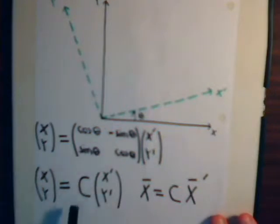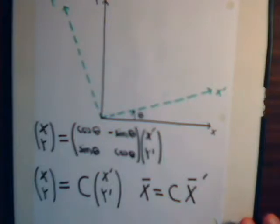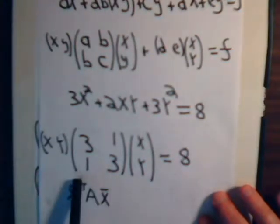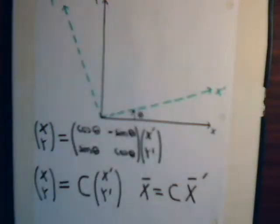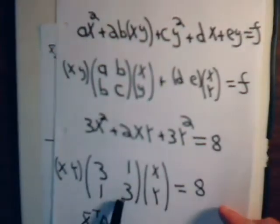So we have x, y equals C times x-prime, y-prime — or just vector x equals matrix C times vector x-prime. Now, this is a symmetric matrix: if you take its transpose, you get the same thing. As we discussed in those earlier videos on the principal axis transformation, if you have a symmetrical matrix — in this case a 2×2 — its eigenvectors are orthogonal.